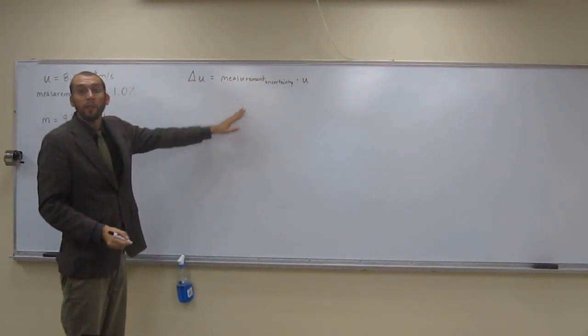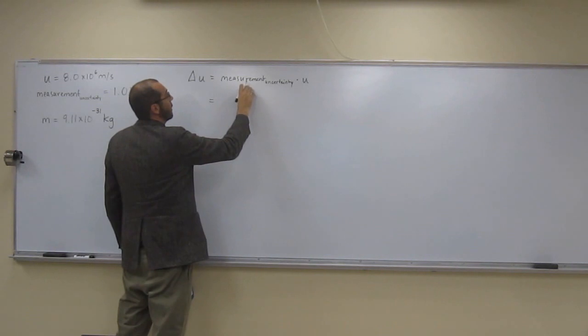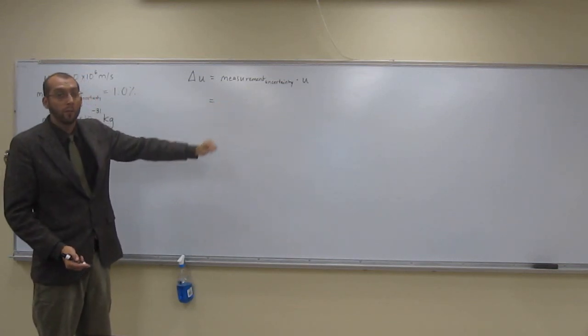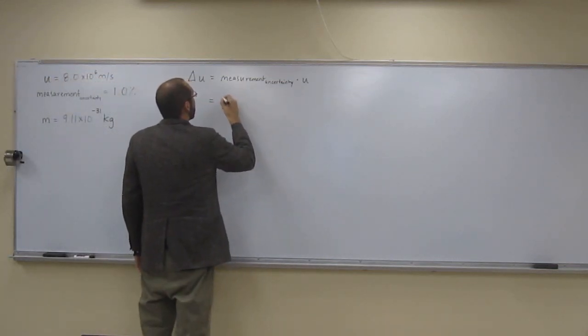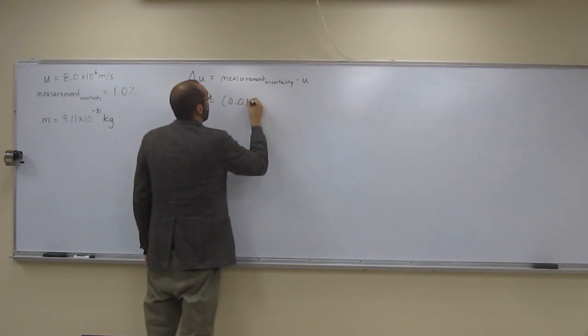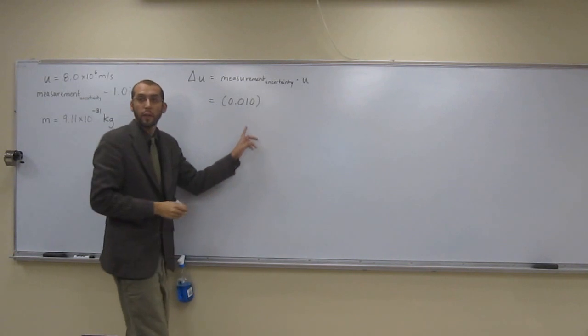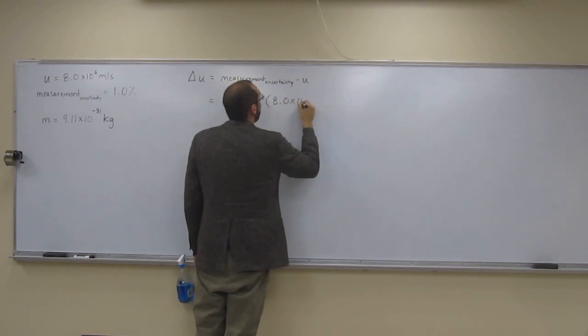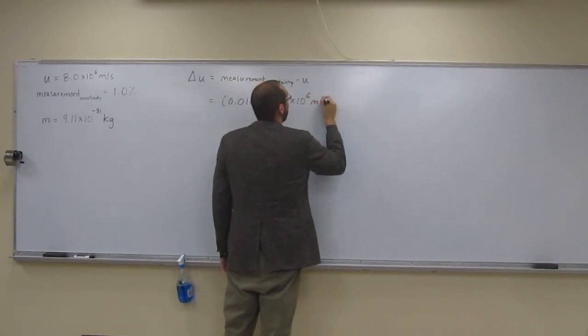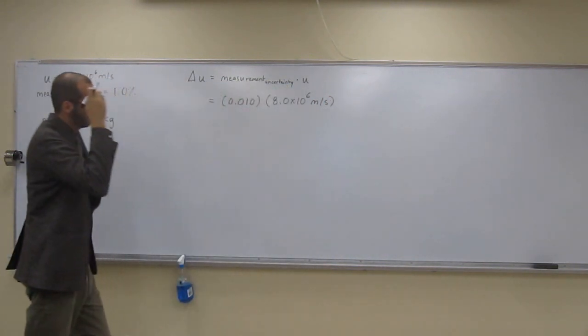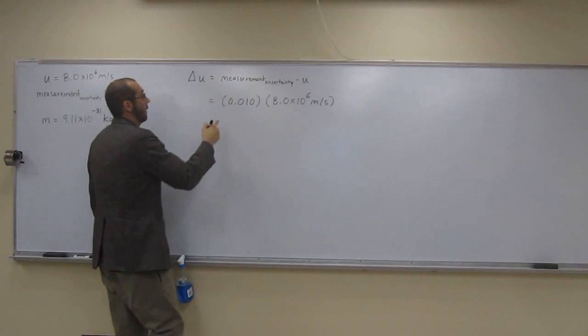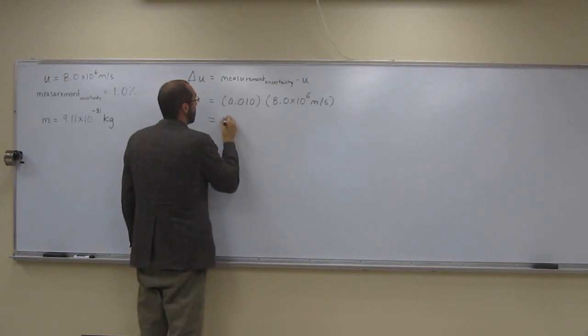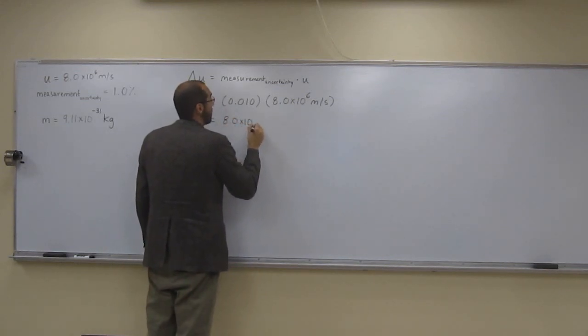So like that. The measurement uncertainty is a percentage though, and we need to put it in a ratio. So it's actually the ratio of that measurement uncertainty. So 1% is going to be 0.010. This is 1.0%, that's the ratio. And we'll multiply that by 8.0 times 10 to the 6 meters per second.